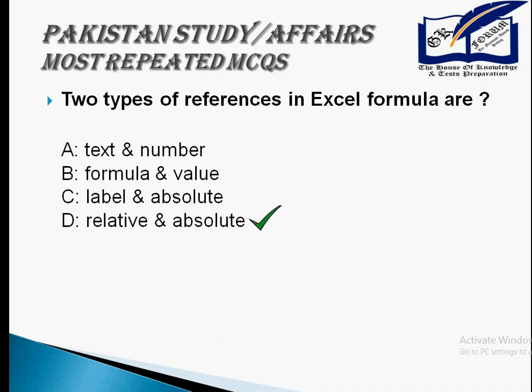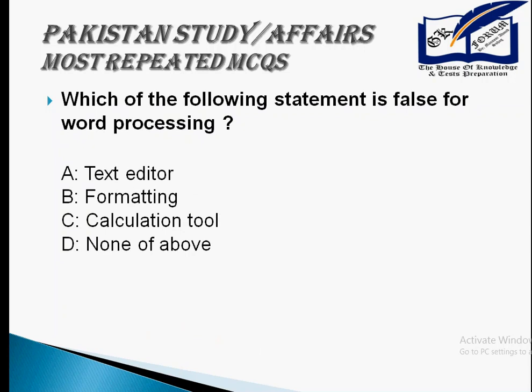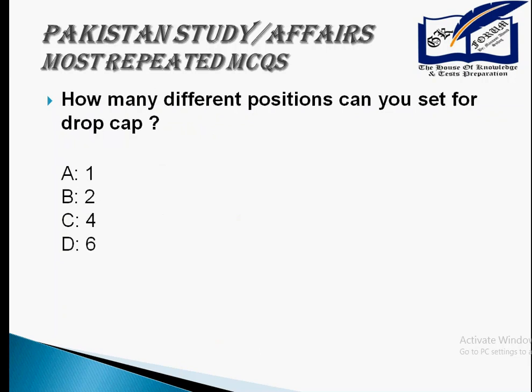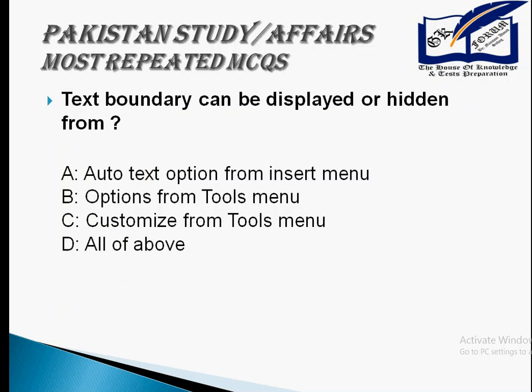Which of the following statements is false for a word processor? It's a calculating tool. Word processor is related to MS Word, and MS Word does not perform calculations — that is done in Excel. The shortcut to open the Font dialogue box is Ctrl+D. How many different positions can you set for tab stops? There are two different positions.